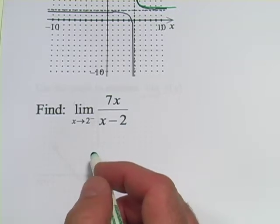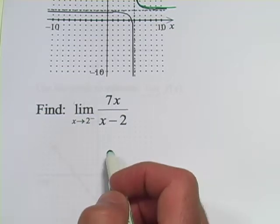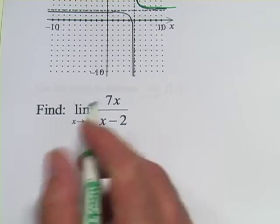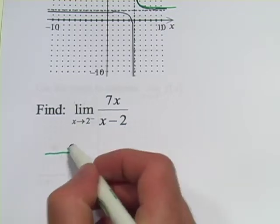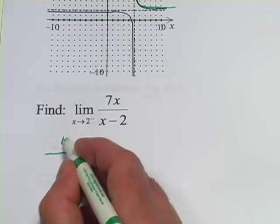I suppose you could graph it, but that's a lot of work. One of the things you can do here is just try out a couple of values. And think about, if you're approaching 2 from this direction, what's a value that's pretty close to 2? Well, let's say 1.9.